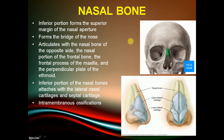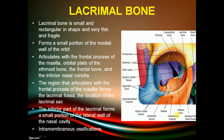The nasal bone forms the bridge of the nose. Its inferior portion forms the superior margin of the nasal aperture, and it articulates with the nasal bone of the opposite side and the nasal portion of the frontal bone. The type of ossification is intramembranous.